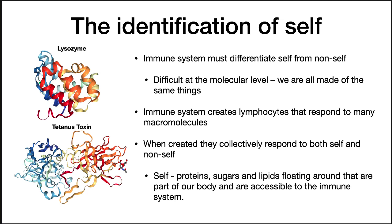The immune system creates lymphocytes that respond to many different macromolecules. When created, they collectively respond to both self and non-self. By self, I mean the proteins, sugars, and lipids floating around that are part of our body and accessible to the immune system. We've got to be able to differentiate between these two things, and you're going to learn about how we do that.